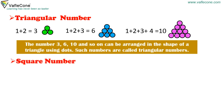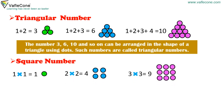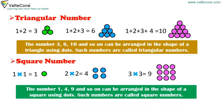Square numbers. 1 x 1 = 1. 2 x 2 = 4. 3 x 3 = 9. The numbers 1, 4, 9, and so on can be arranged in the shape of a square using dots. Such numbers are called square numbers.